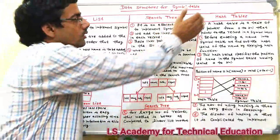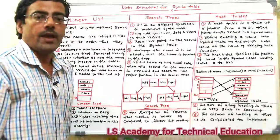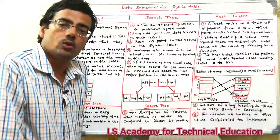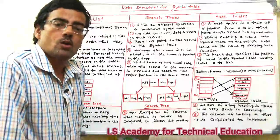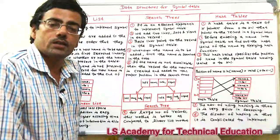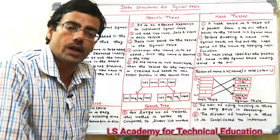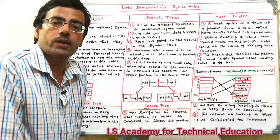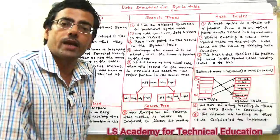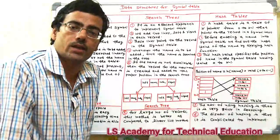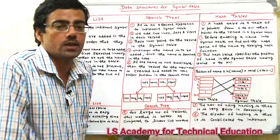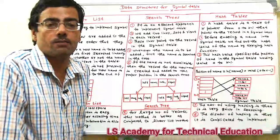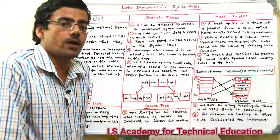The third method is the hash table. In the hash table method, the symbol table is created using a hash table as an index. A hash function is used to retrieve and insert data efficiently.